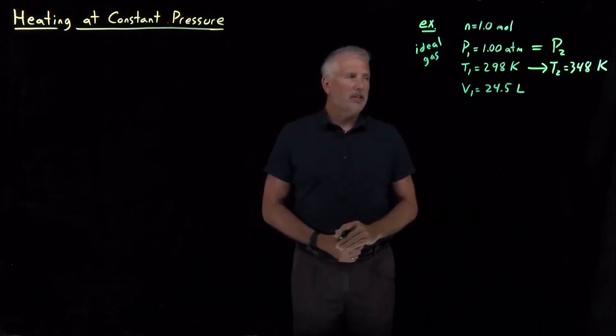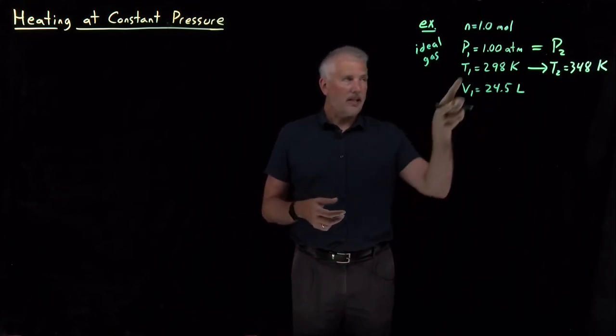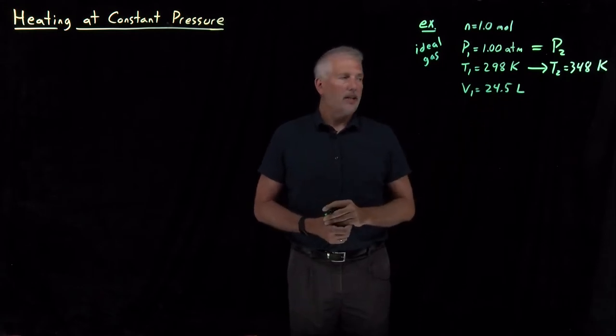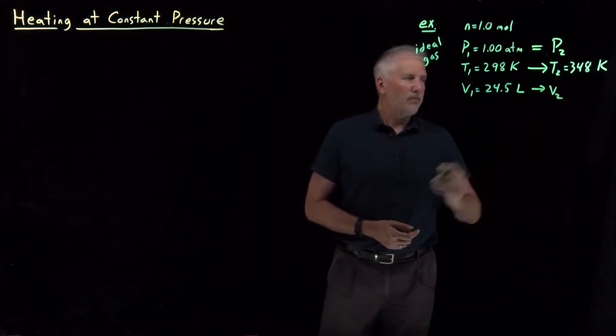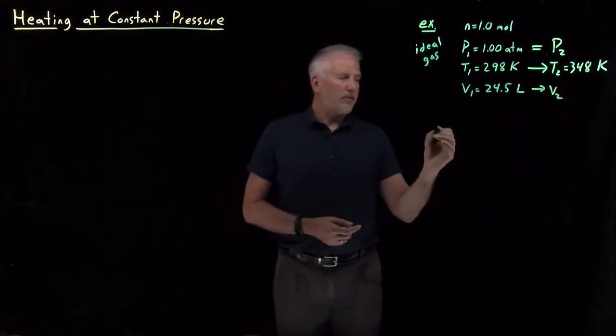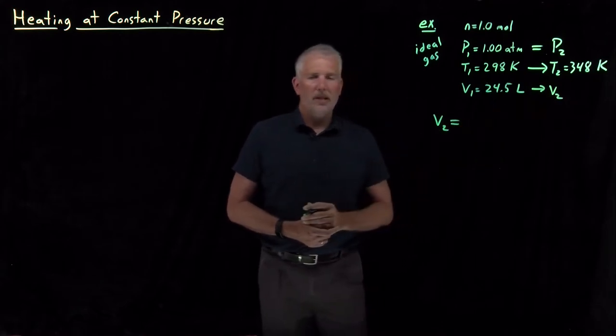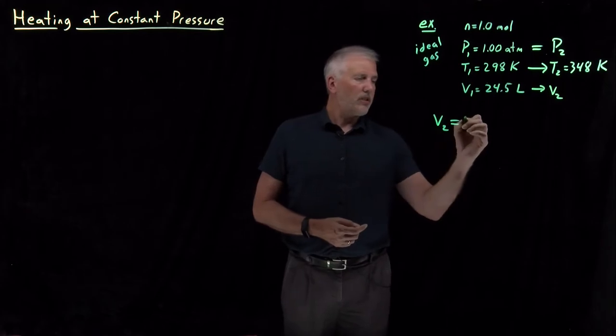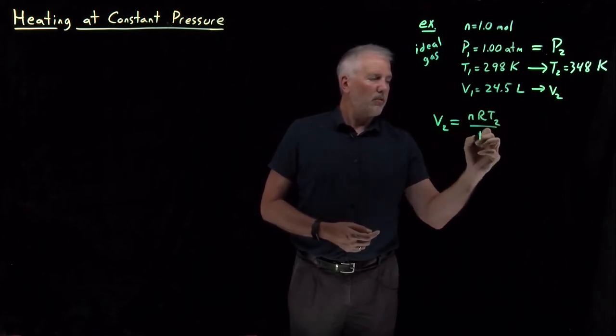We're not going to allow the pressure to change, and what that means is the volume is going to have to increase. If I have a box of gas at constant pressure and I heat it up, its volume will increase—it will expand as I increase its temperature. We can calculate what that final volume should be using the ideal gas law. PV equals nRT, so V₂ is equal to nRT over P.